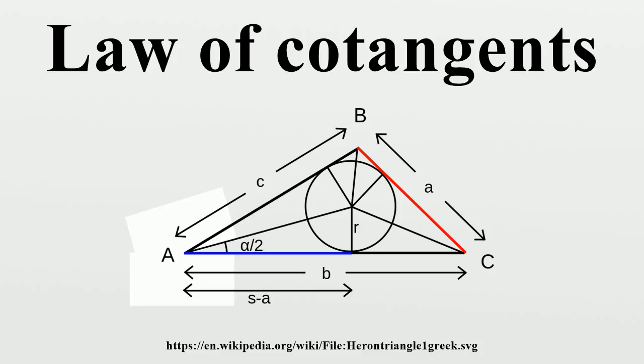Alpha, beta, gamma are the corresponding angles at those vertices, s is the semi-perimeter, that is, s equals a plus b plus c over 2, and r is the radius of the inscribed circle.